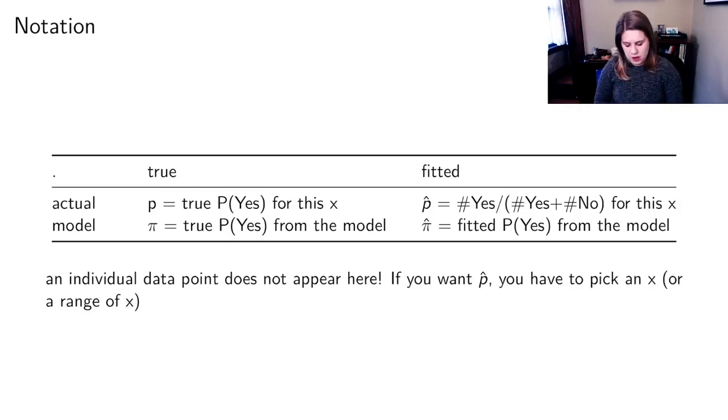Then we also have the model. We've got pi which is the true probability of yes from the model, and then we've got pi-hat which is the fitted probability of yes from the model. So instead of just two things we've got four, and the other thing to notice is that an individual data point does not appear here.